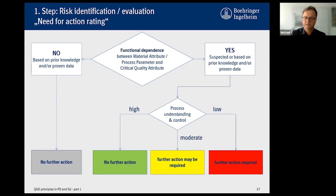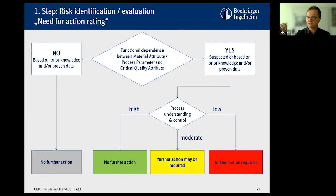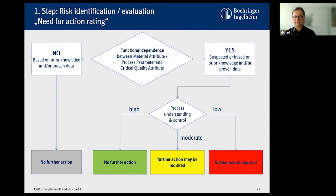The second question is: do I understand this phenomenon and can I control it? If you already have data showing that dissolution properties are fine with a particle size distribution of, say, 10 to 50 micron, and you control this by raw material testing, then you're green — you have understanding and a control option. If you don't have this data, you need to do an experiment to find the appropriate specification and control option. This traffic light approach gives you an orientation of what you've achieved and where you still need to work.